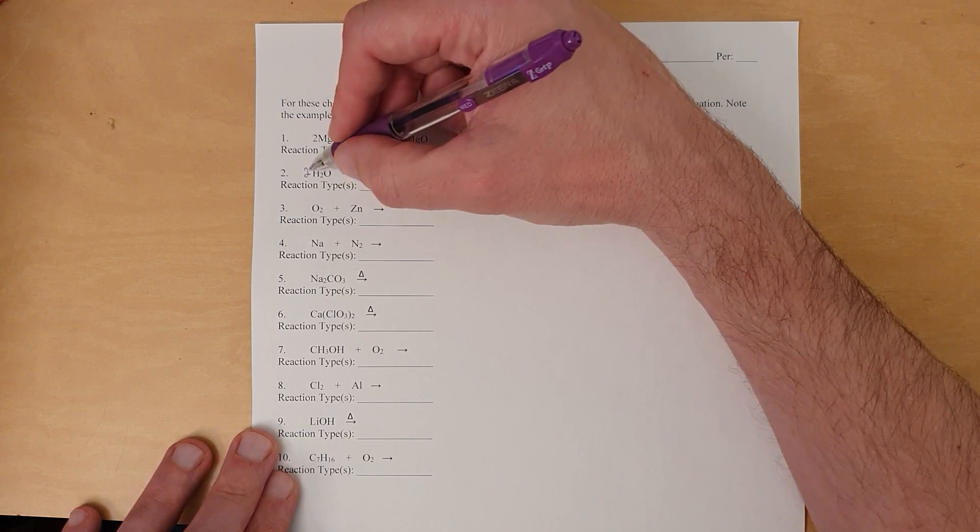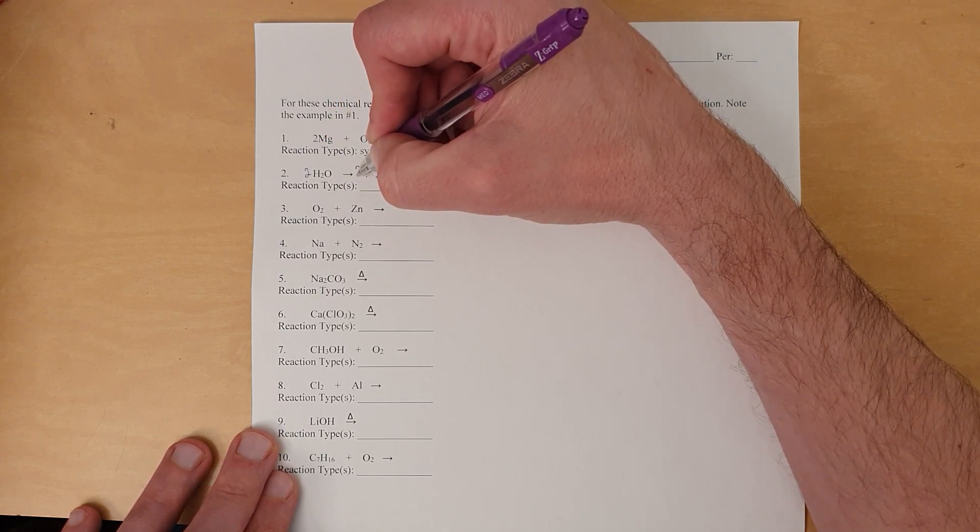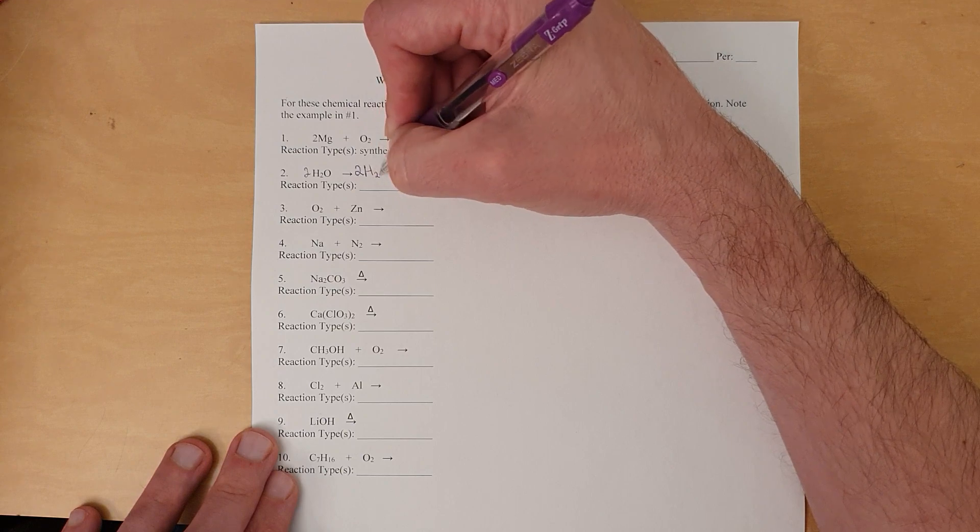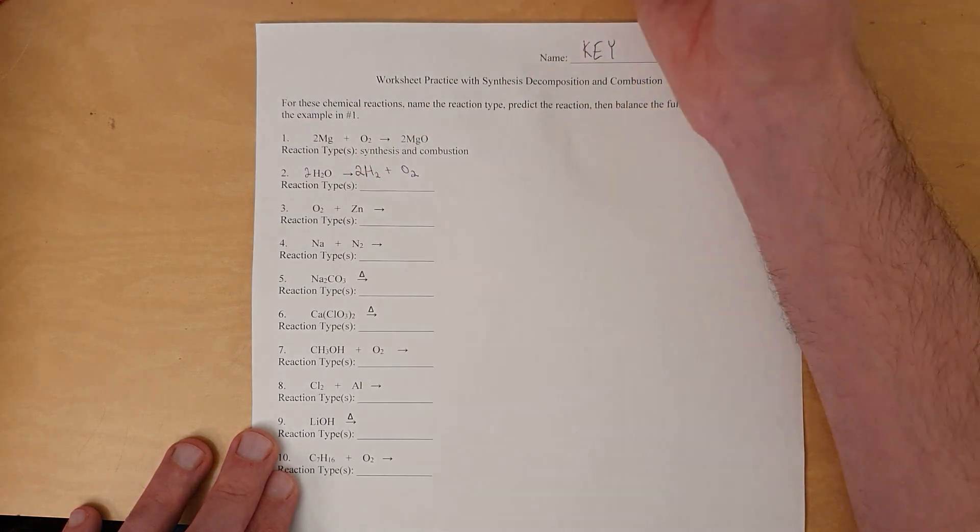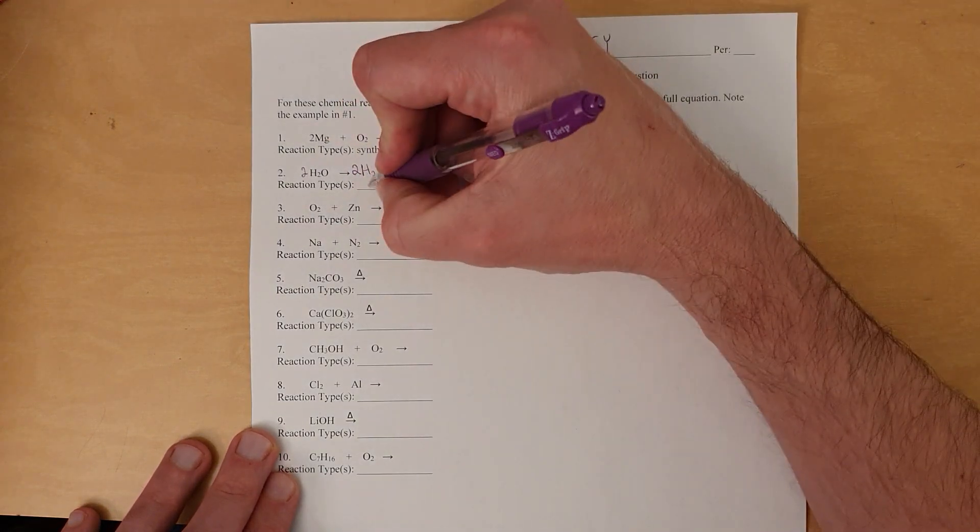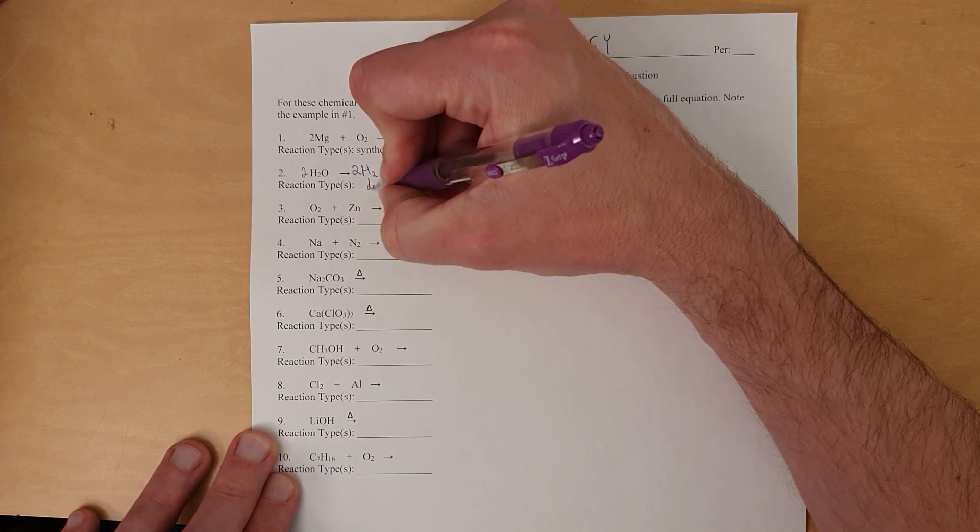Okay, so put a 2 here, that way it's two oxygens and two oxygens. But if you've got two times H2, it's four hydrogens, which means four hydrogens here also by putting a 2 here. So 2 H2O produces 2 H2 plus O2. And by the way, I mentioned earlier, I just neglected to write it down. This is decomposition.